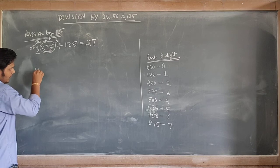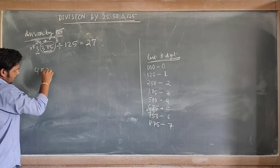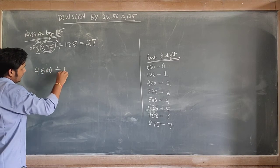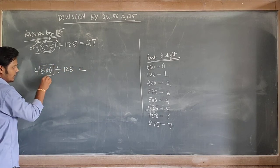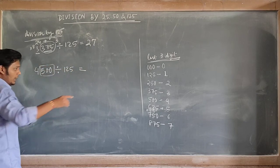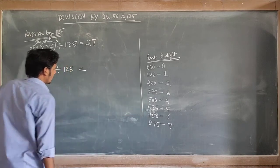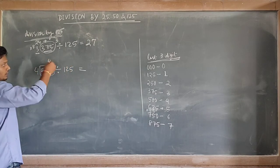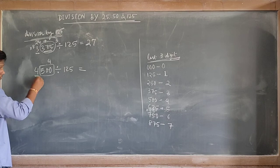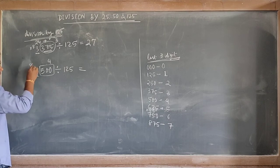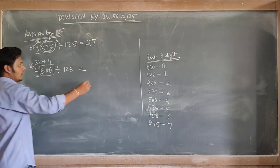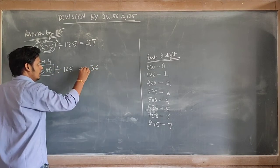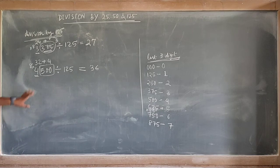Suppose 4500 divided by 125. Separate the last three digits: 500. For 500, we can take 4 times 125, so we add 4. The remaining digit is 4, multiply by 8: 4 times 8 is 32. Then 32 plus 4 — the answer is 36.